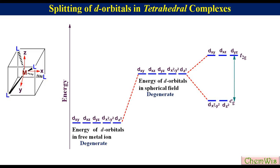The difference between the energy of t2g and eg is denoted by delta-T or 10dq-T. The difference between the energy of eg and the energy of d-orbitals in the spherical field is -0.6 delta-T or -6dq-T, and the difference between the energy of t2g and the energy of d-orbitals in the spherical field is +0.4 delta-T or +4dq-T.